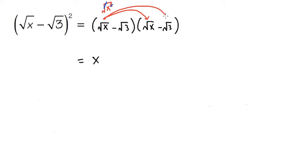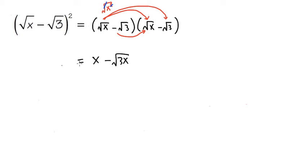We take square root of x times negative square root of 3. We know that it's going to be negative first. And then the x and the 3 are inside of the square root, so we can multiply them together — that will be 3x, and that's still inside of the square root. Then we continue: we take negative square root of 3 times square root of x, which gives us another minus square root of 3x inside.